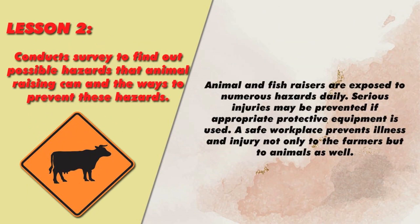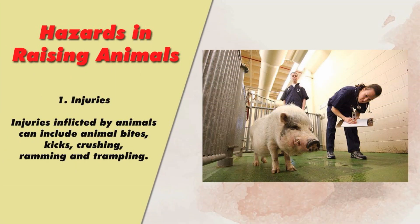Conduct a survey to find out possible hazards that animal raising can cause and the ways to prevent these hazards. Animal and fish raisers are exposed to numerous hazards daily. Serious injuries may be prevented if appropriate protective equipment is used. A safe workplace prevents illness and injury not only to the farmers but to animals as well. Hazards in raising animals — One: Injuries. Injuries inflicted by animals can include animal bites, kicks, crushing, ramming, and trampling.